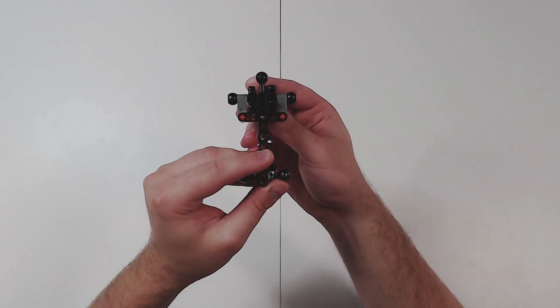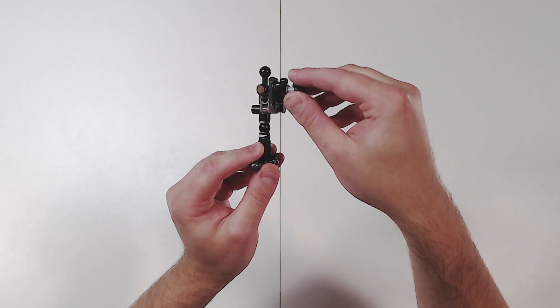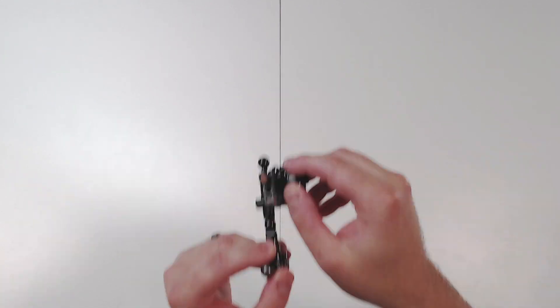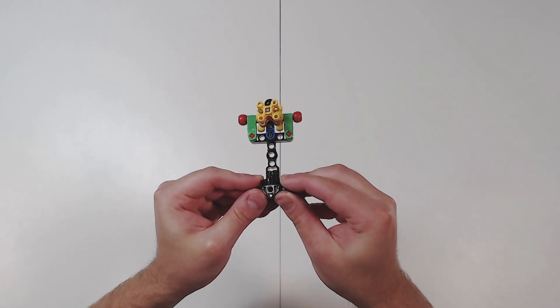Today, we're going to be building this basic gearbox, which allows our character's arms to swing back and forth opposite one another. Here's that same gearbox with a bit more color to make it pop.